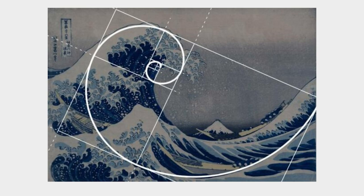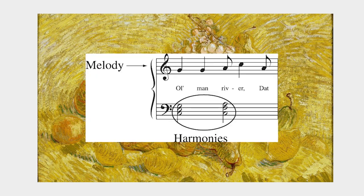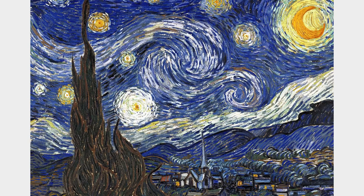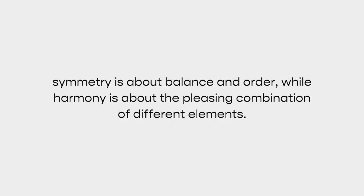Harmony is achieved when elements are combined in a way that is pleasing to the senses and creates a sense of unity. In visual arts, harmony can be achieved through complementary colors, repetition of shapes or patterns, or a consistent style. In summary, symmetry is about balance and order, while harmony is about pleasing combination. Kibbe himself talks about moving away from symmetry and instead finding harmony — something I definitely agree with and utilize in my own work.